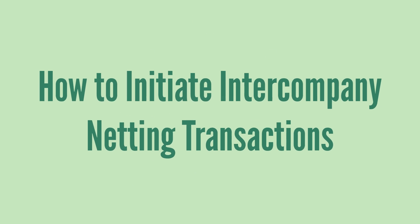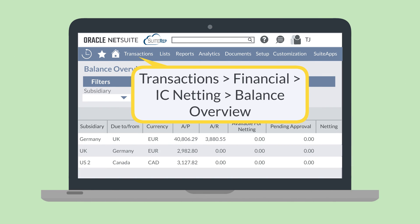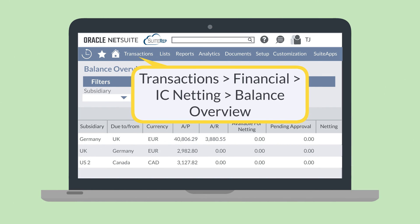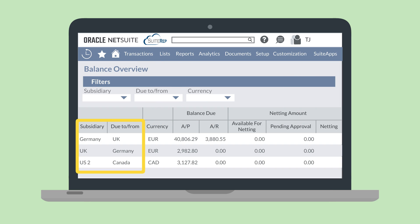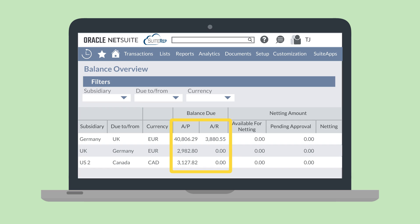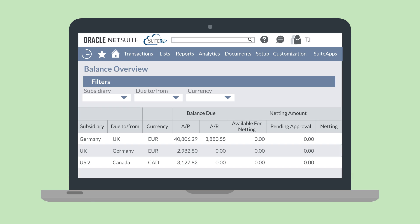To initiate an intercompany netting transaction, navigate to Transactions, Financial, IC Netting, Balance Overview. This page displays pairs of subsidiaries, the AR and AP transaction amounts they have, and the amounts that are available for netting. When netting is available for a subsidiary pair, you'll see a New link under the netting column. Selecting this link will take you to the netting workbench page, where you can review the nettable transactions and save the page to create a netting statement.